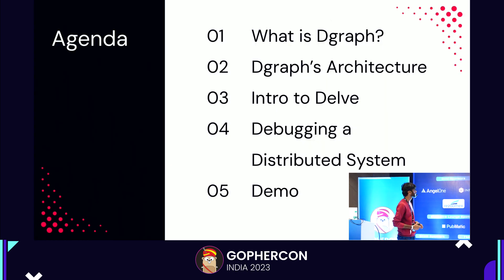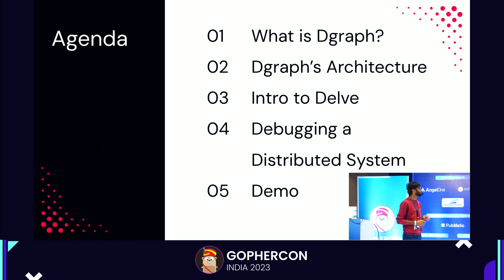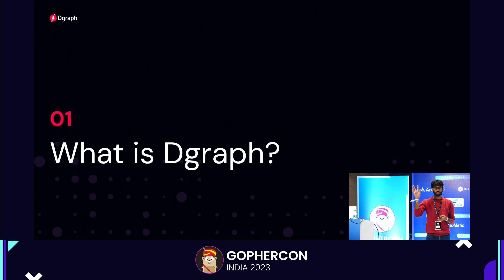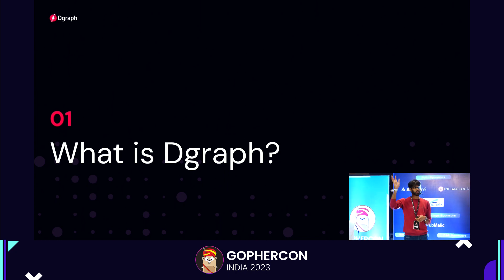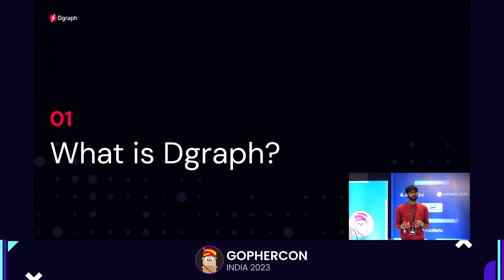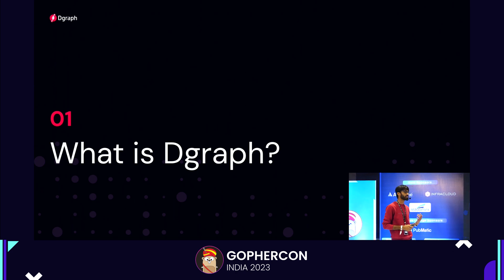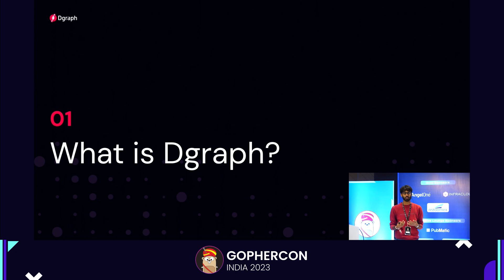This is the agenda of the talk. I'll start with what DGraph is, talk about a bit of the architecture of DGraph, give a little intro to Delve, then talk about how we go about debugging a distributed system, and finally we'll see a demo. Before we go into the talk — how many people have worked with distributed systems in their career? How many people have worked with microservices? Microservices are distributed systems, so everybody has actually worked with distributed systems.